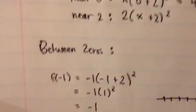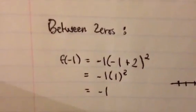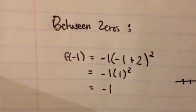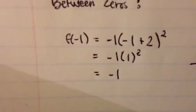And between the zeros would be negative 1. So you get negative 1 times negative 1 plus 2 squared. So you get negative 1 times 1 squared, and 1 squared is 1 times negative 1 is negative 1.